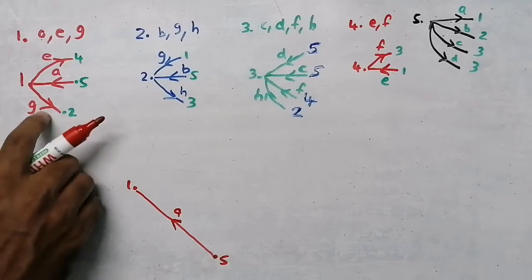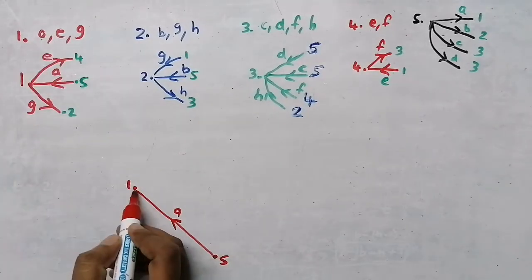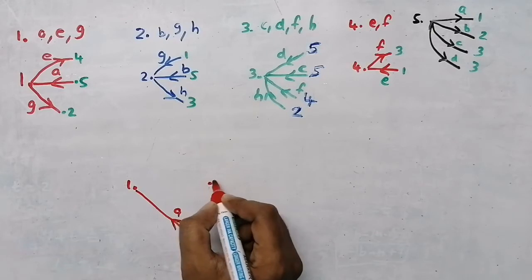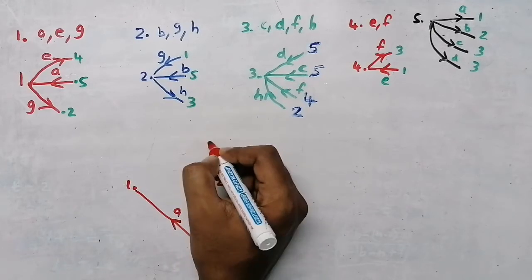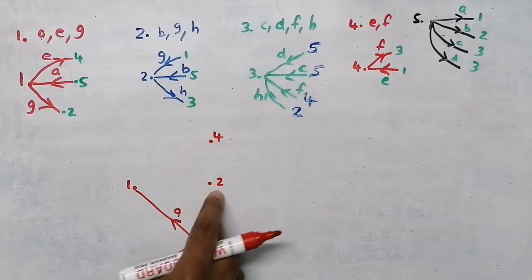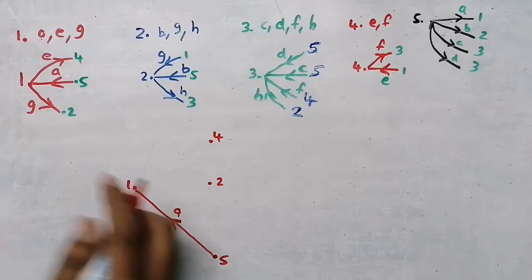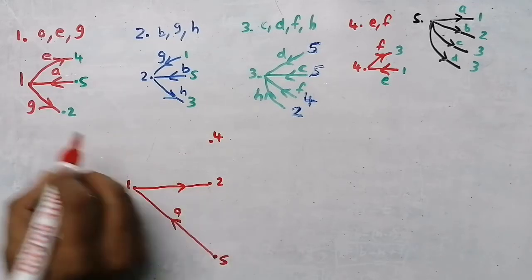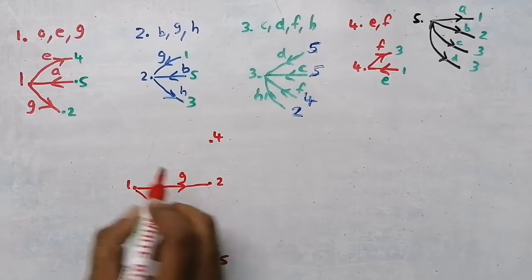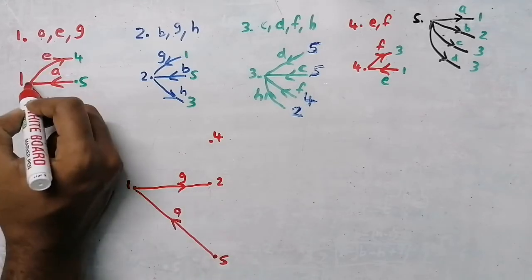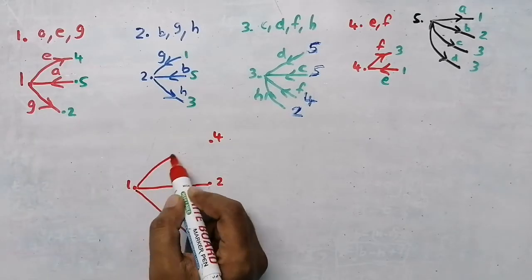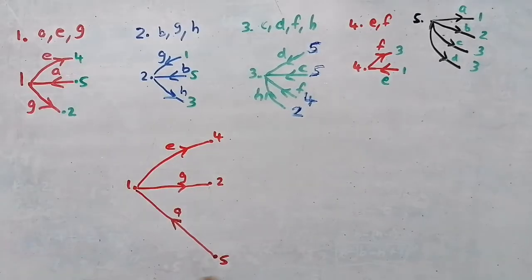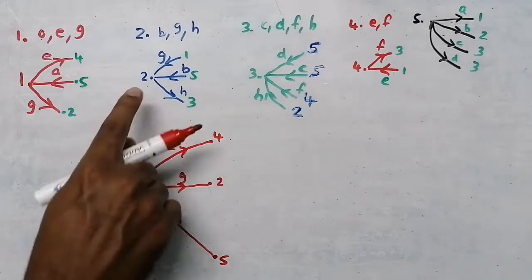Now I am going to write the remaining nodes 2 and 4. I am going to plot node 2 here and node 4 here. To node 2 I have branch g - branch g is from node 1 to node 2. To node 4 I have branch e, and that is also moving from node 1 to node 4.